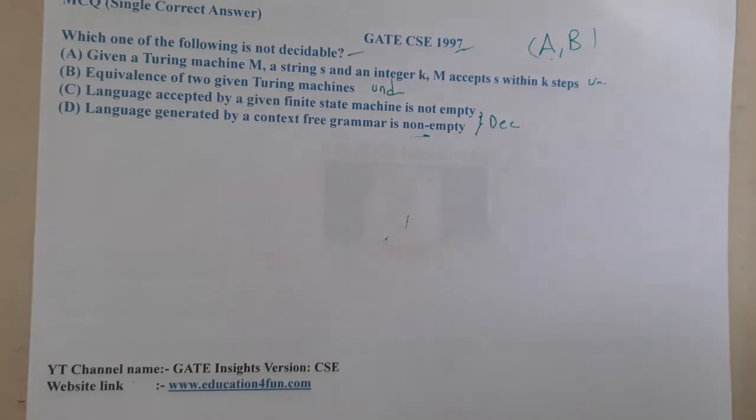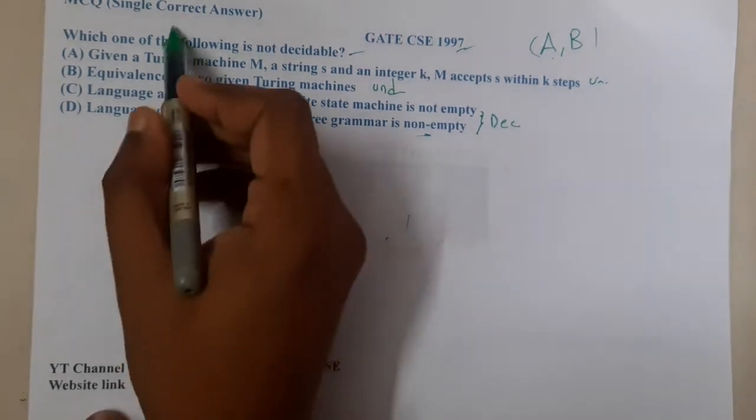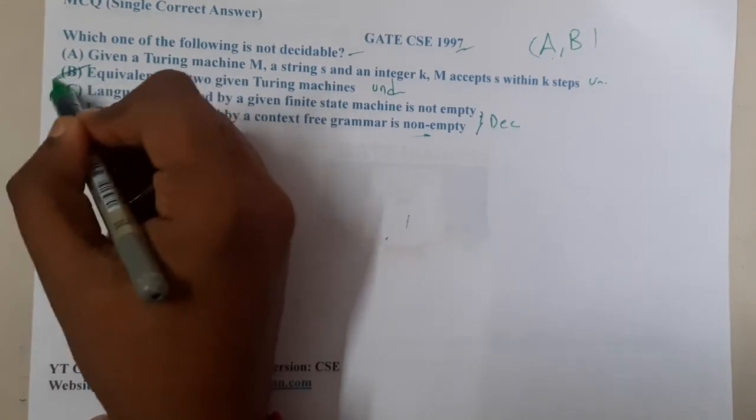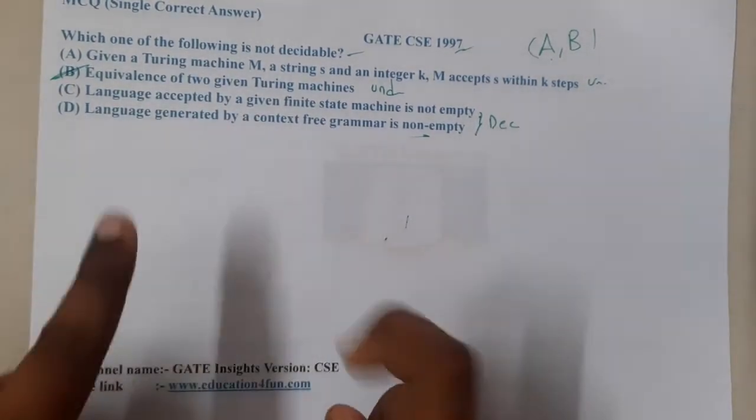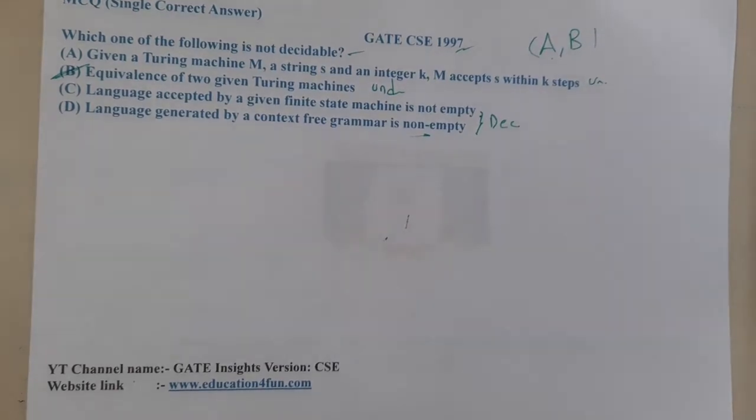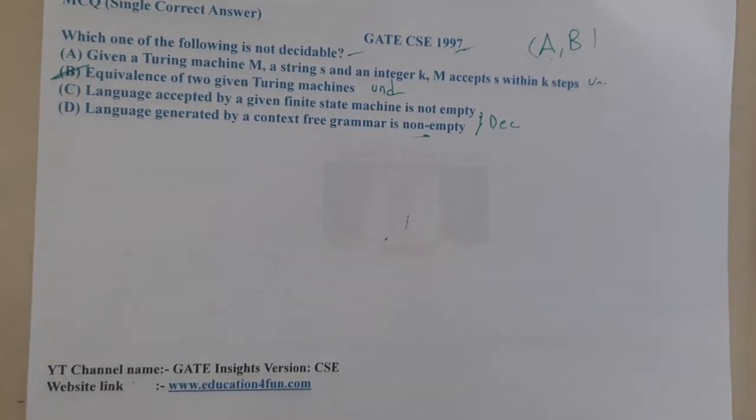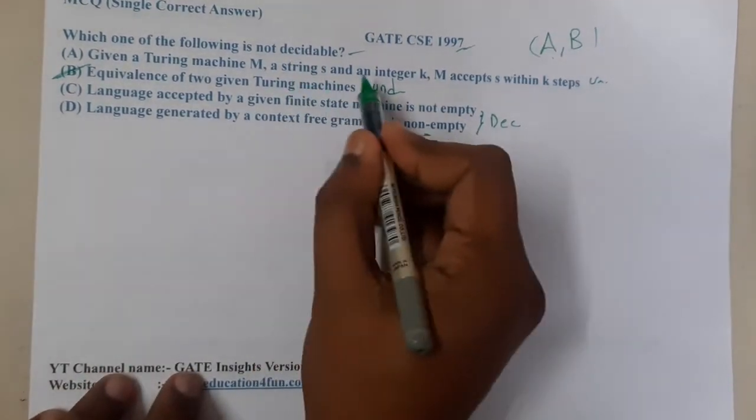Both of them will be undecidable, but in the examination, if this is a single-select question, I will be answering B because I am 100% sure that equivalence of two Turing machines is impossible. Some students might be saying that if there are k steps, it might be decidable. It might be, I am not sure about it.